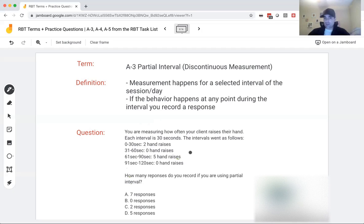If we're recording how many responses, what would you choose? Would you choose seven, zero, two, or five? We're using partial interval. If the behavior happened at all, we record a response. So look at our first one, two hand raises. The behavior happened. One response. Second, zero. No responses. The behavior didn't happen. Third, five hand raises. The behavior happened. We record a response. Lastly, zero, zero. So that would come out to be 50%.